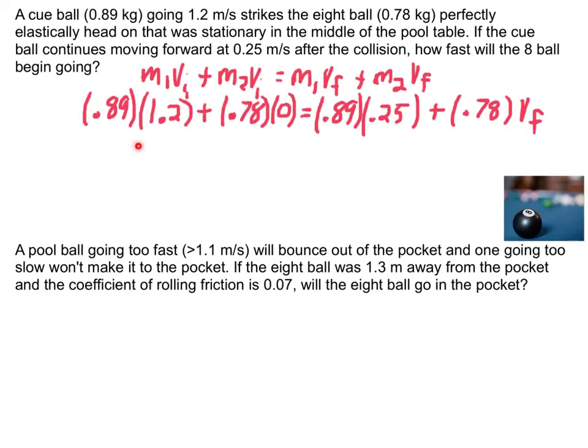So I've got my cue ball here going 1.2 meters per second, and the eight ball is stationary, so I'm calling the eight ball mass 2 or object 2. On the final side, the cue ball continues to move forward at 0.25 meters per second. So notice the signs with this. Everything is going from what I'm calling forward positive. The cue ball continues to move the same direction. So I called the direction it was initially going positive. So if it continues to go that direction, it's positive there. And I'm expecting my final velocity for my eight ball to come out positive.